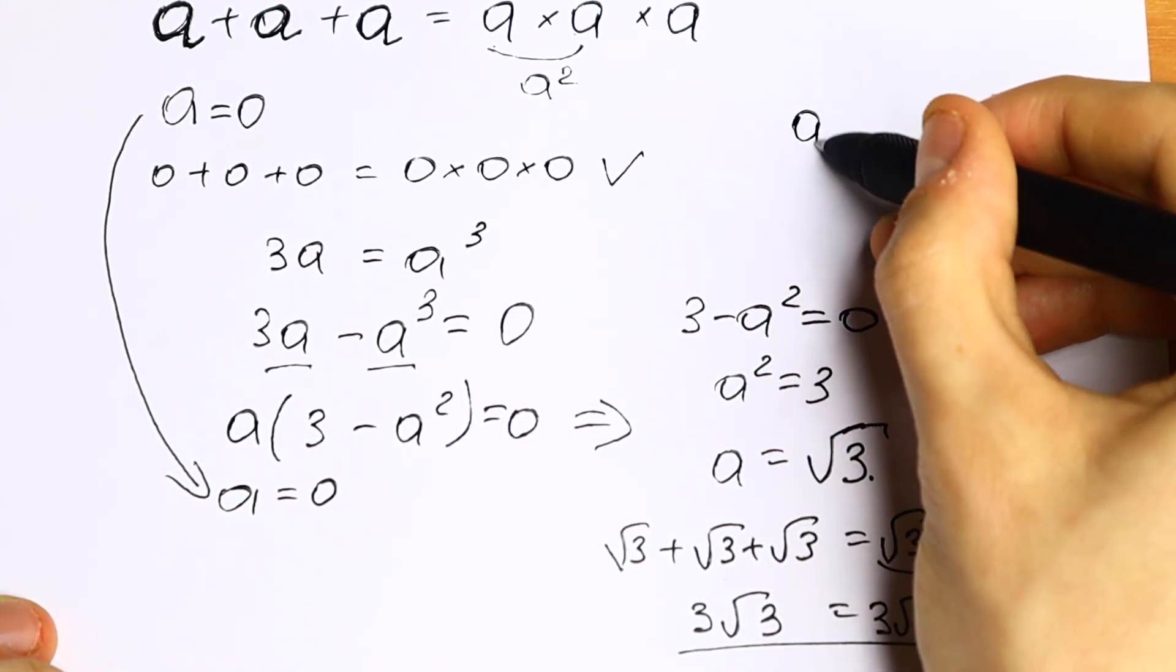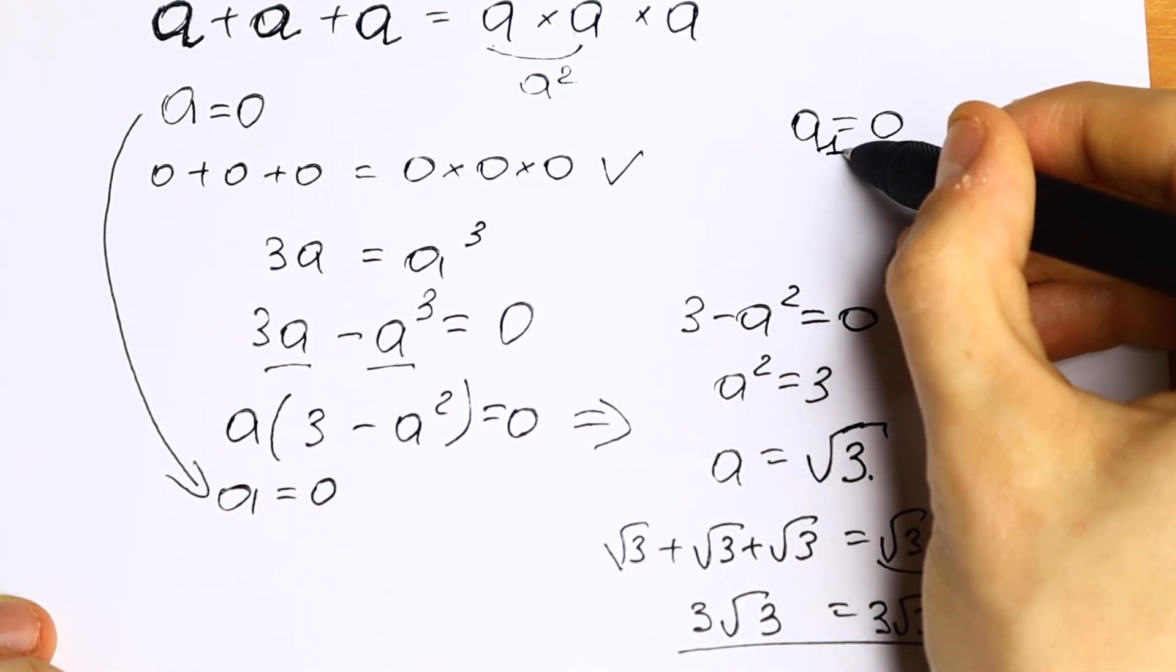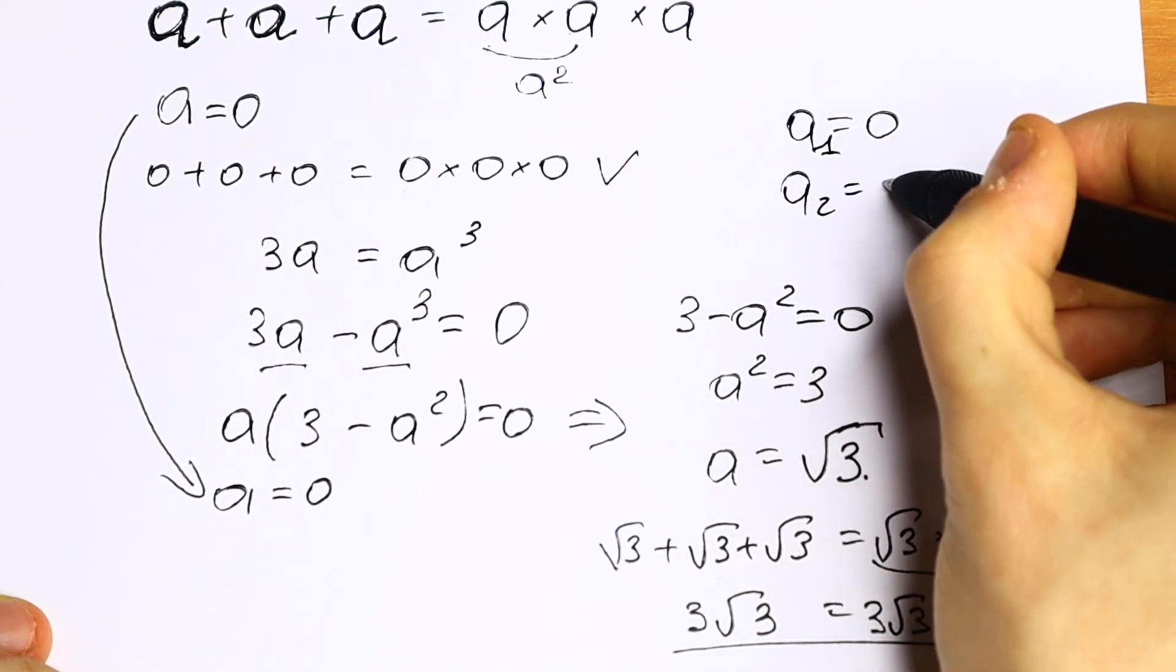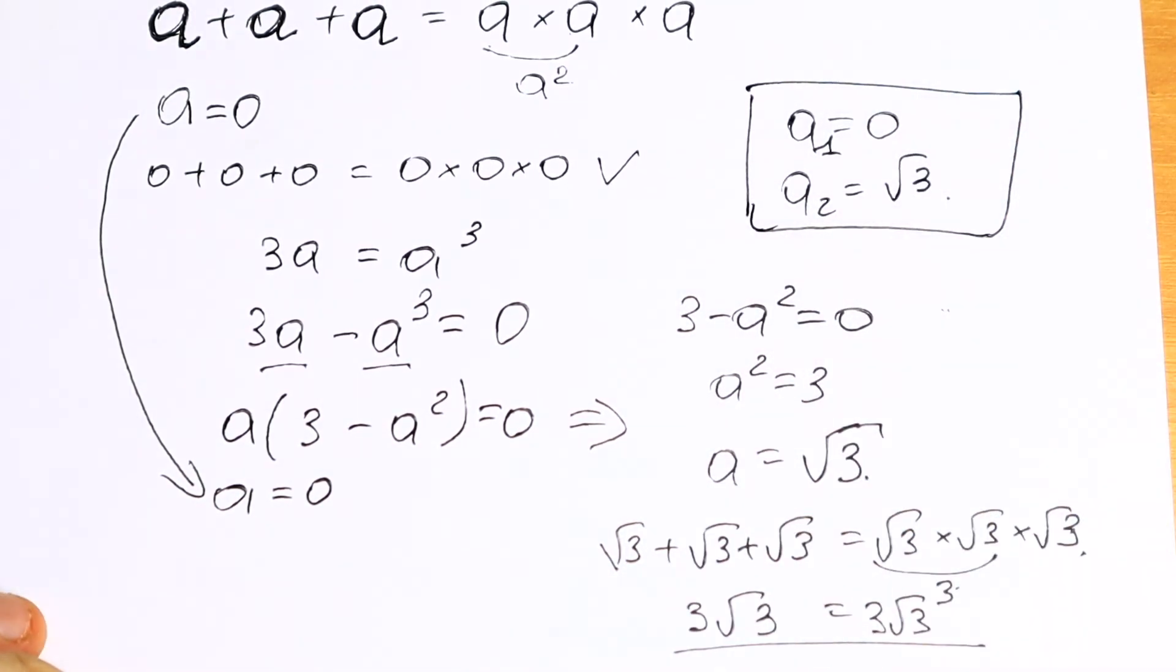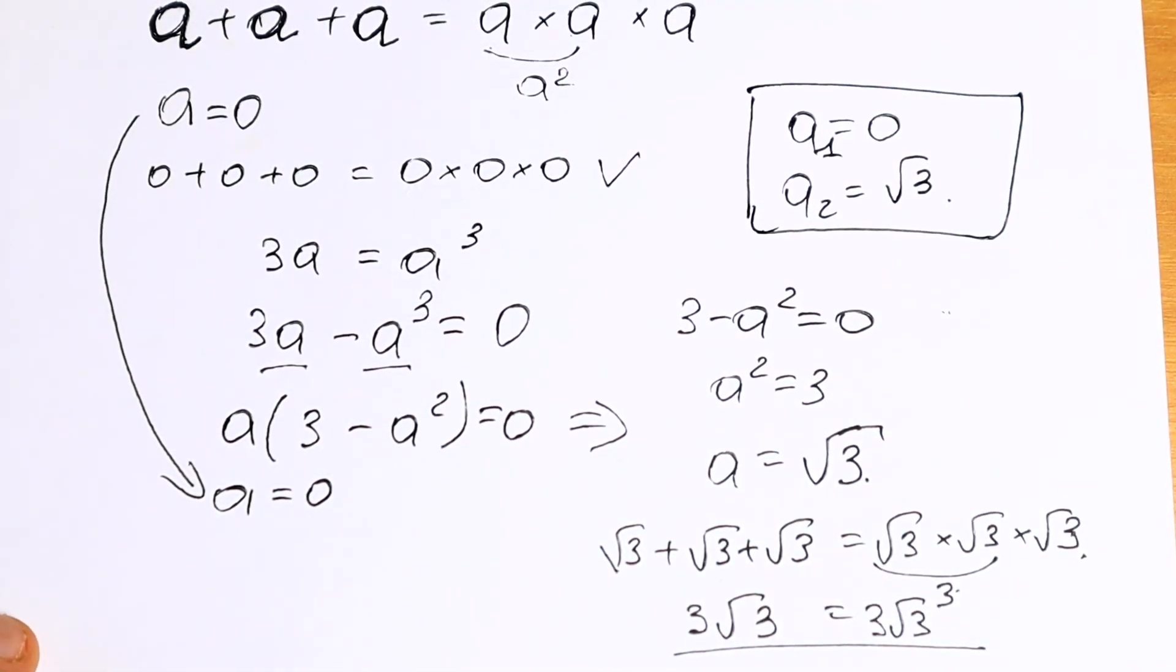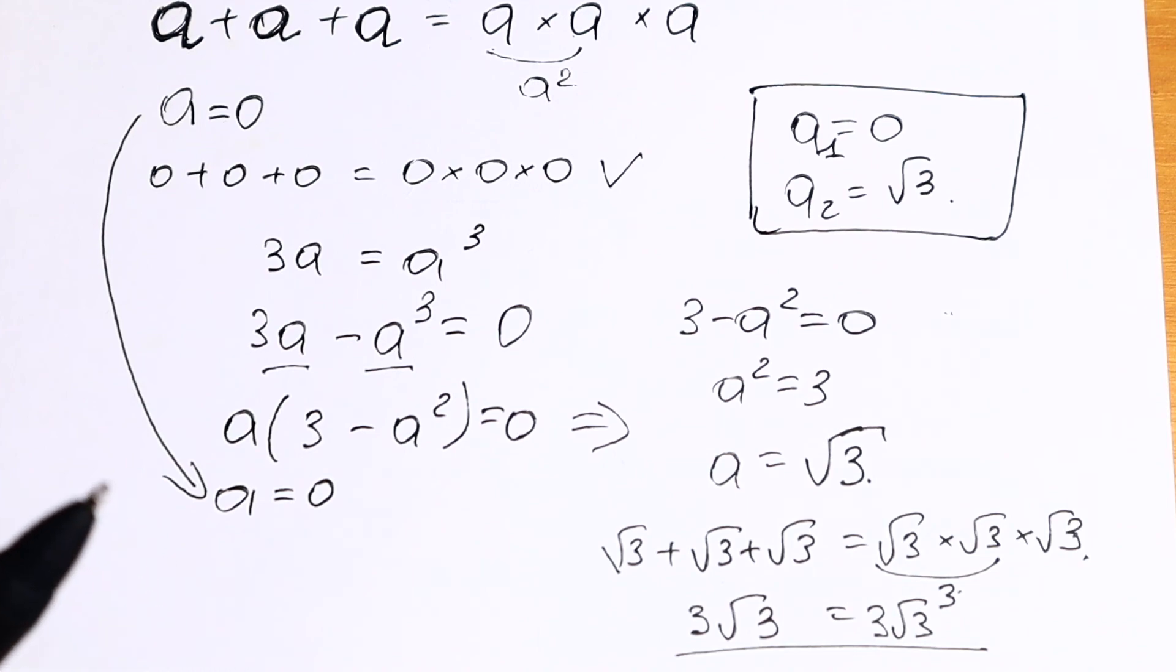So we will have 2 roots. The first one a equal to 0, and the second equal to square root of 3. These are our 2 roots. If you have any question write a question in comment. Write a suggestion in comment. Thank you for watching and see you in the next videos.